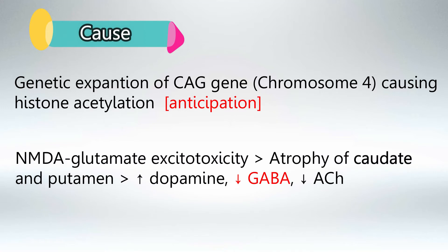The specific cause of Huntington's disease is NMDA glutamate excitotoxicity, which will result in atrophy of the caudate and putamen. This will result in a decrease in GABA and ACh and an increase in dopamine. The decrease in GABA will cause the symptoms.